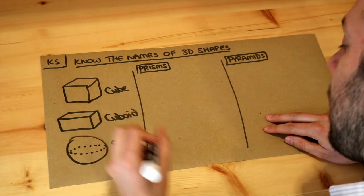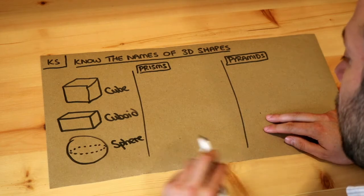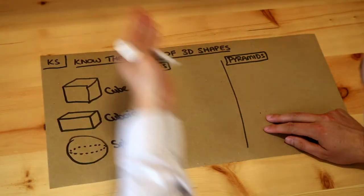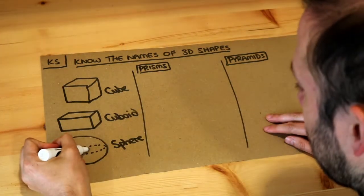So a sphere is basically the 3D version of a circle where all the points on the surface of the sphere, like if you're on the surface of the earth, wherever you are is the same distance from the centre.